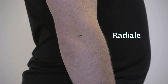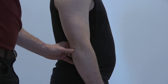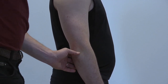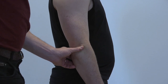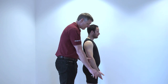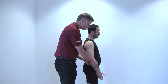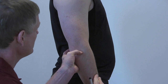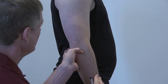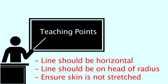The radiali is the point at the proximal and lateral border of the head of the radius. The classifier stands at the side of the athlete and palpates downward in the lateral dimple of the right elbow, feeling the space between the capitulum of the humerus and the head of the radius. Confirm the correct landmark by asking the athlete to gently pronate and supinate the forearm so that the head of the radius can be felt to rotate. Find the most proximal and lateral point of the radius and make a small horizontal indentation on the skin, then mark it with a horizontal line. Teaching points: the line should be horizontal, not vertical; it should be on the head of the radius, not in the joint space or on the humerus.